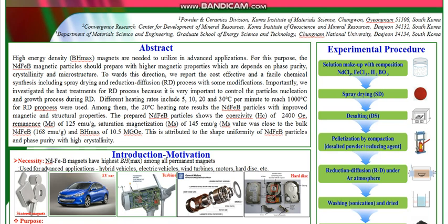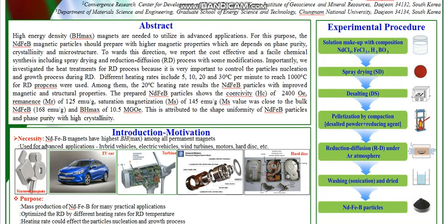The preparation method integrates spray drying with the RD process. Initially, the prepared solution with the stoichiometry of Neodymium, Iron, and Boric Acid is spray dried, followed by desalting, then compaction for the RD pellet. After washing, we obtain the final NdFeB particles.